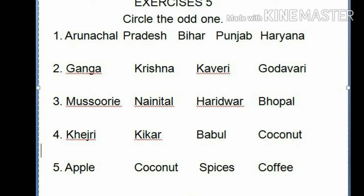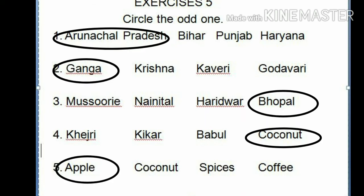Exercise 5: Circle the odd one. Number 1: Arunachal Pradesh, Bihar, Punjab, Haryana. Arunachal Pradesh is the odd one because it lies in the Purvachal hill ranges, while Bihar, Punjab, and Haryana lie in the northern plains. Number 2: Ganga, Krishna, Kaveri, Godavari.